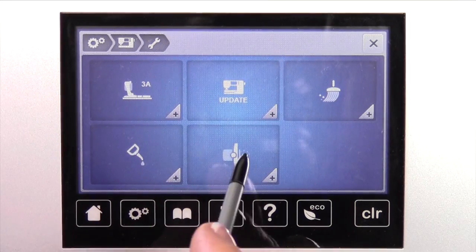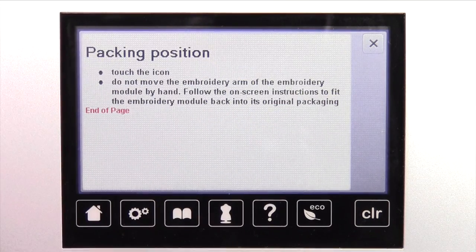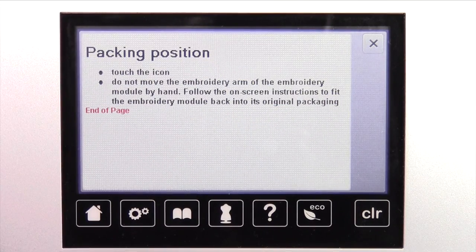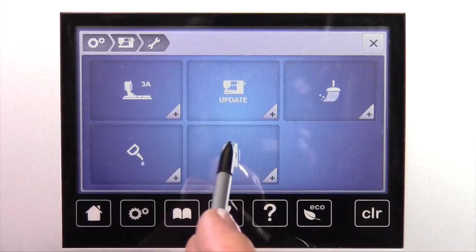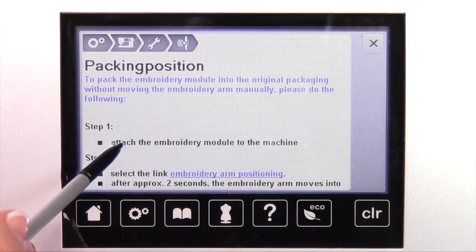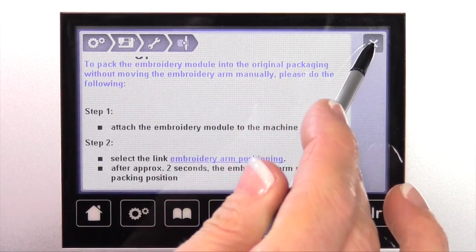The last one is actually for setting the embroidery module back into a park position or so it fits back into the styrofoam. That embroidery unit can actually be moved. What I'll do is walk you through how to set that back into a position that fits into the box.